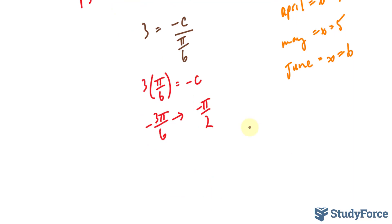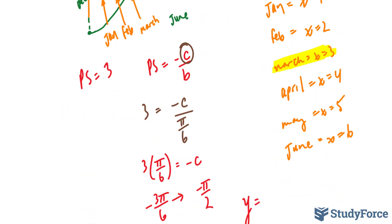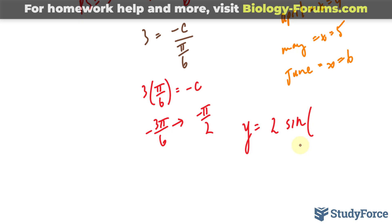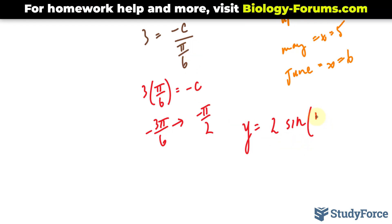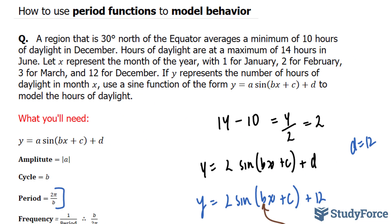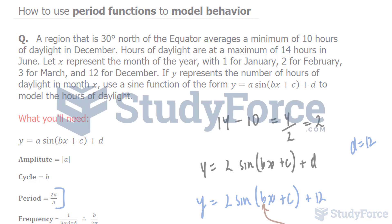y equals our amplitude, which was 2, sine our cycle, π/6 times x, our c value, -π/2, plus d, which was 12. That's the answer to the question, and that is how to use period functions to model behavior.